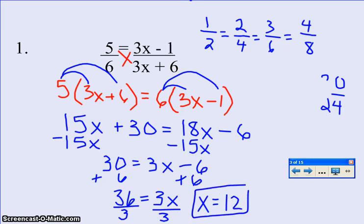So my answer to this problem is x equals 12, and what that's telling me is that if I replace the x with the 12, let's see what happens. 3 times 12 is 36, minus 1 gives me a numerator of 35, and on the bottom, 3 times 12 is 36.